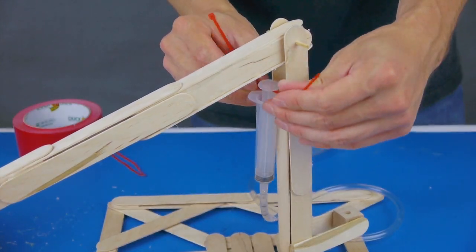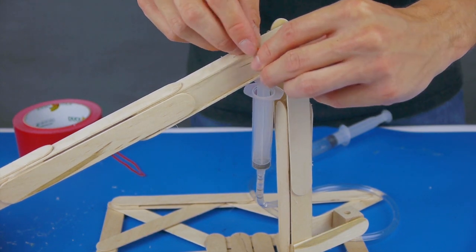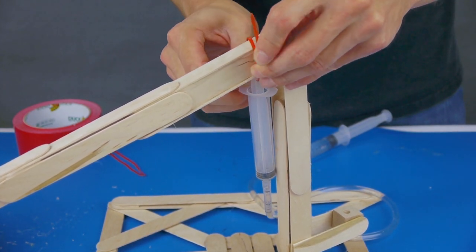Insert a cable tie through the plunger, and then tie it onto the fighting arm. Keep it a little bit loose. If it's too tight, it won't work.